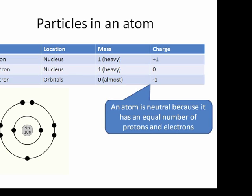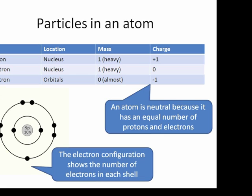Electrons orbit in shells. Remember, two, eight, eight. That is, two is the maximum number of electrons in the first shell. Eight is the maximum in the second shell, and eight in the third shell. So fluorine, having nine electrons, has two in the first shell. That's now full. So then you start filling up the second shell. There's only seven more electrons, so they all go into the second shell. That's called the electron configuration. We can also represent it in numbers to save drawing all those circles. Two in the first shell, seven in the second shell.